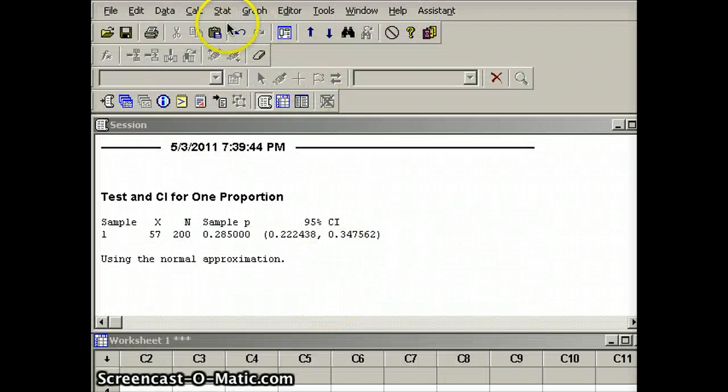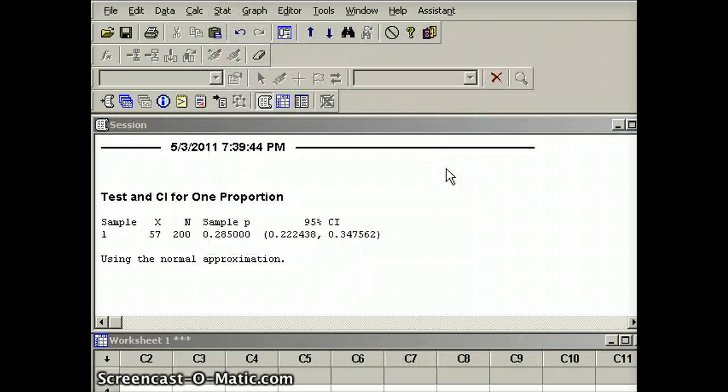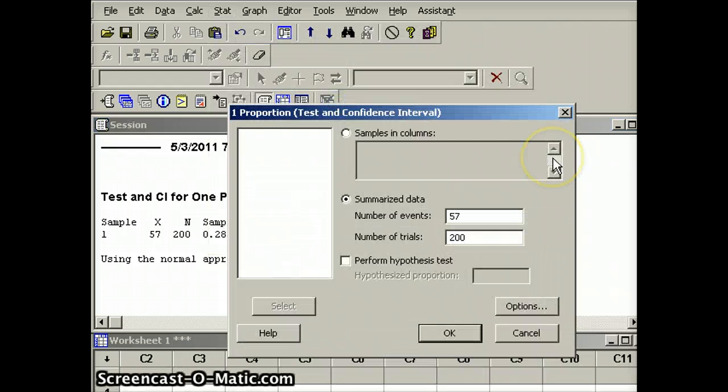So again we want to go to our stat button, we're going to go to basic statistics, and we are going to go to the one proportion button. And the numbers that we had there before are still there; we need to change this. This time we're going to have 110 out of 500.